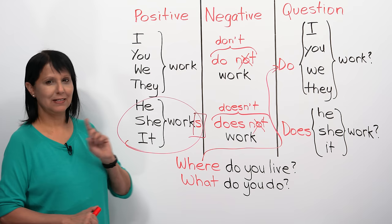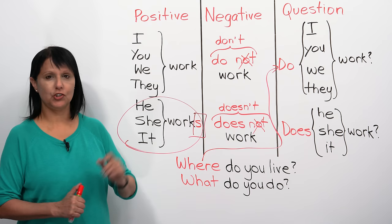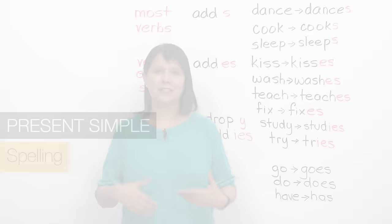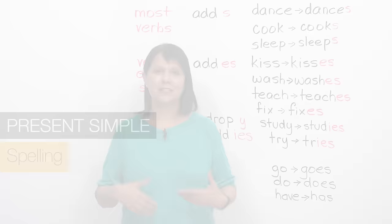So in the negative and in the question, even for he, she, and it, we go back to the base form of the verb. He doesn't work. Does he work? You do need to remember that in the positive sentence, add the S. That's the structure of the present simple tense - it's really pretty straightforward. You just need to practice it and you will get it.